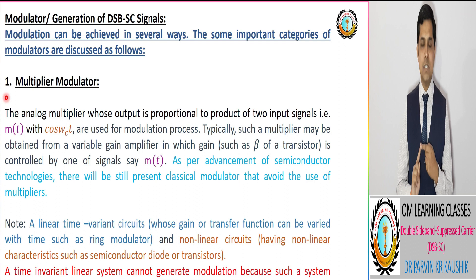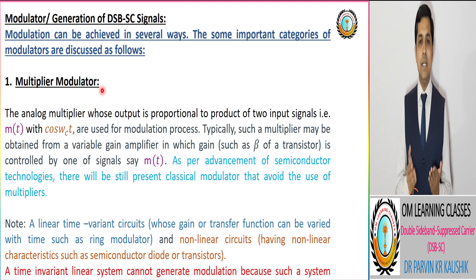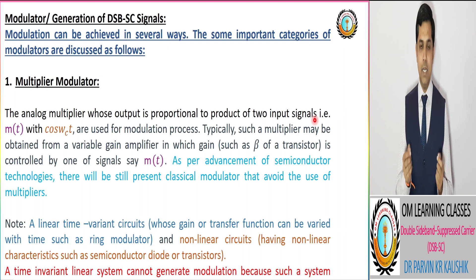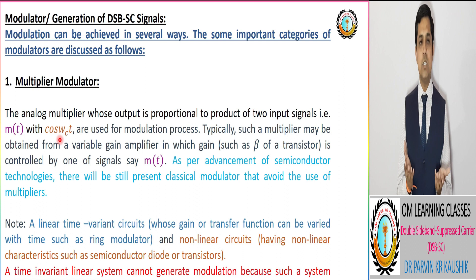The first modulator is the multiplier modulator. In the multiplier modulator, an analog multiplier is used whose output is proportional to the product of two input signals — corresponding to your modulating signal m(t) and corresponding to your carrier signal cos(ωC·t) — and both are utilized for the DSB-SC modulation process.